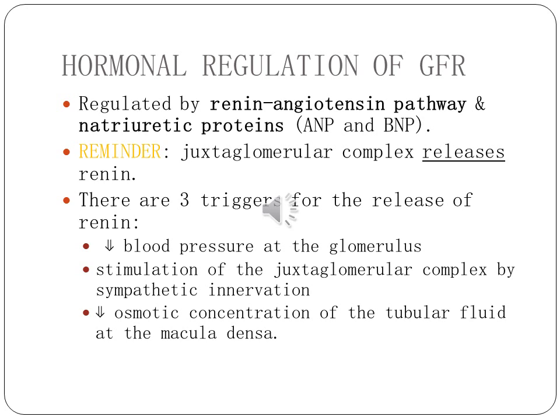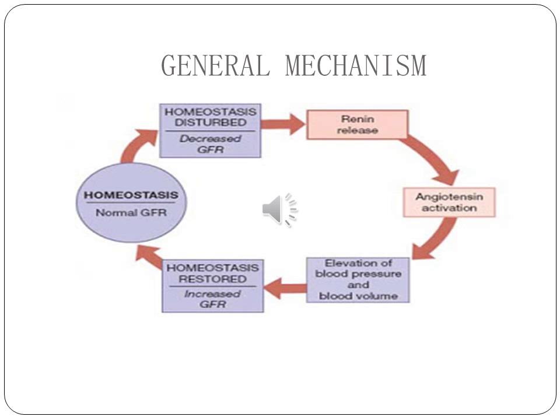For hormonal regulation of GFR, it is regulated by the renin-angiotensin pathway and natriuretic peptides. The juxtaglomerular complex releases renin in response to decreased blood pressure at the glomerulus, stimulation of the juxtaglomerular complex by sympathetic innervation, and decreased osmotic concentration of the tubular fluid at the macula densa. This is the general mechanism of hormonal regulation of GFR.